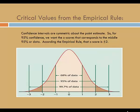Confidence intervals are symmetric about the point estimate. So for 95% confidence, we want the z-score that corresponds to the middle 95% of data. According to the empirical rule, that z-score is 2.